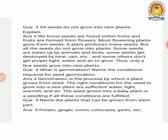Question number five. Name the plants that can be grown from stem part. Seeds which can grow, meaning vegetative propagation. Potato, ginger, onion, colocasia, garlic, etc.